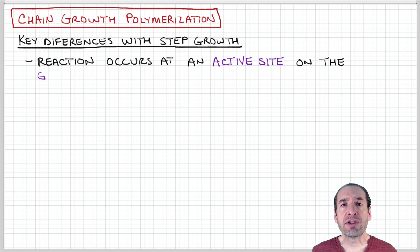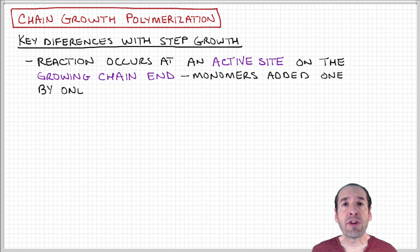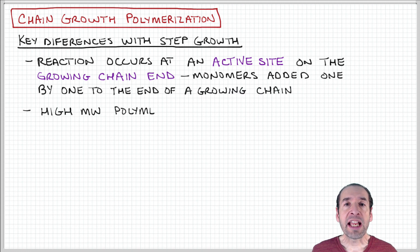the reaction occurs due to functional groups that are on the ends of monomer units, and those functional groups can then react with each other to join monomers together, to join polymers with monomers, and to join two polymers together.